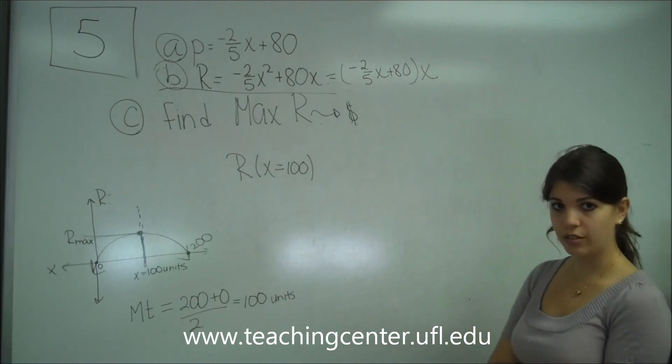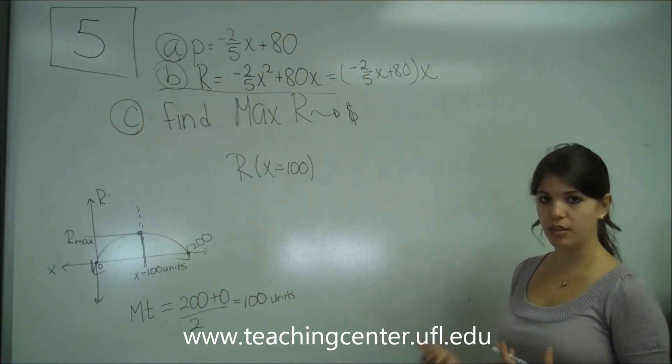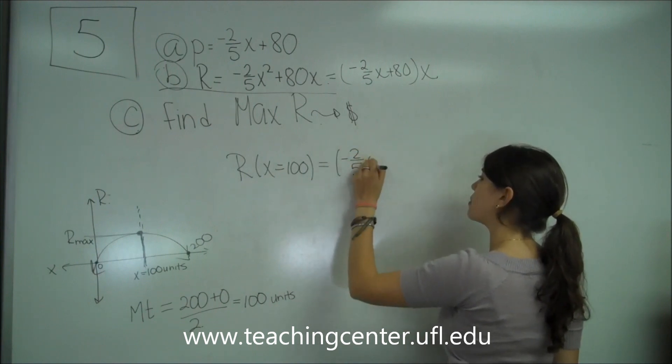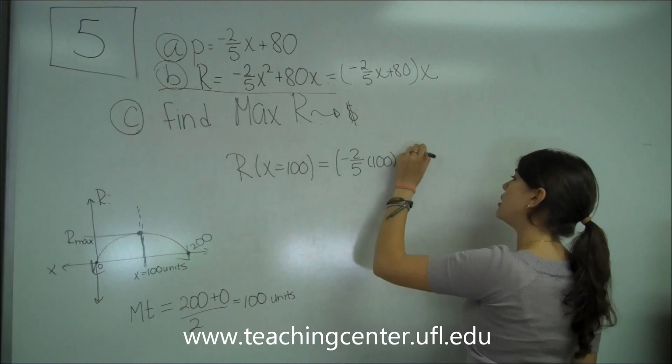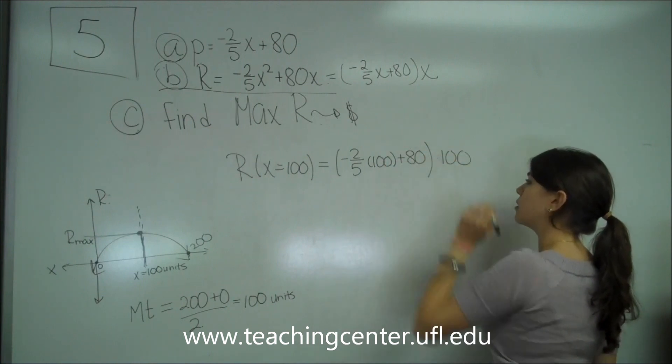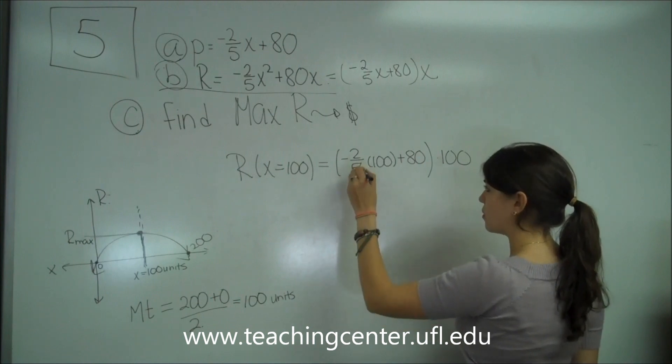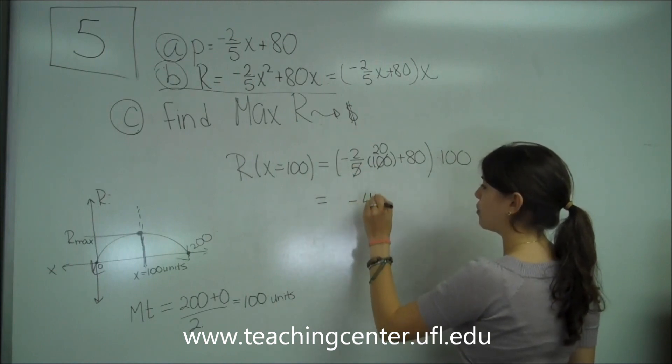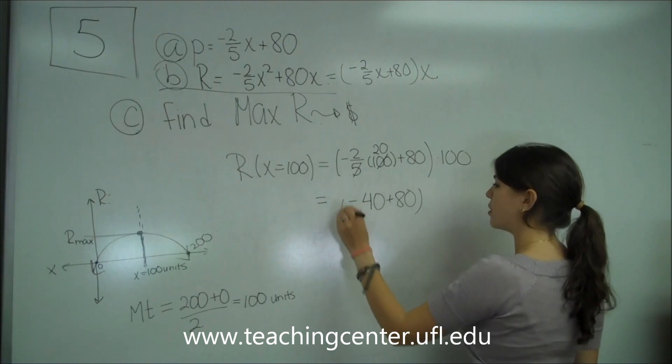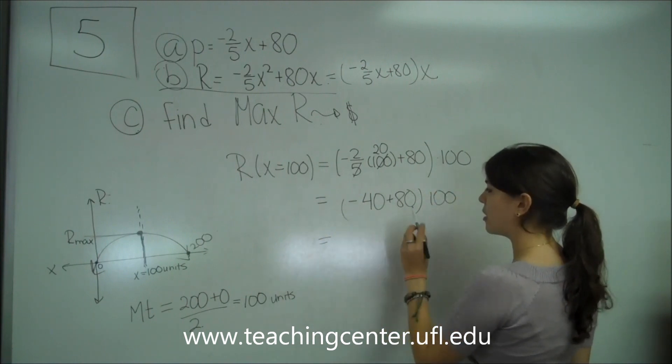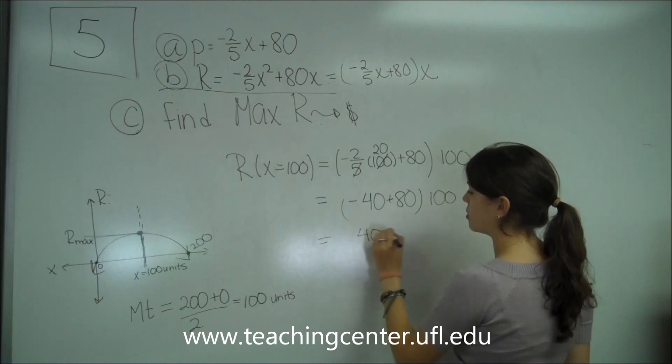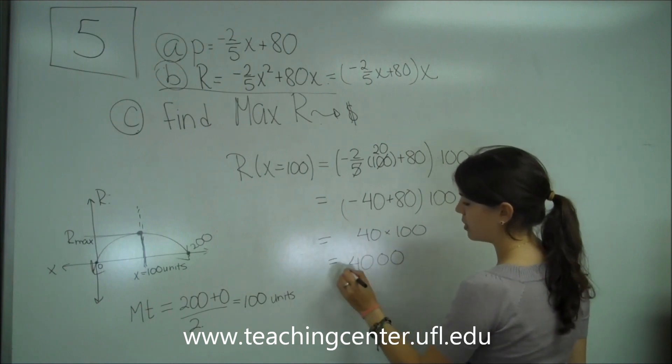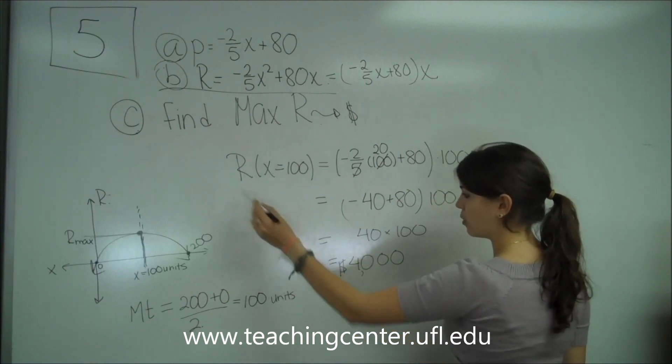Remember, we want to speed up the amount of time it takes us to do the algebra. So, negative 2 fifths times 100, plus 80, all times x. So, I can cancel the 5 with the 100 to get me 20. So, I'm getting negative 2 times 20 is negative 40, plus 80, all in parentheses, times 100. So, this ends up giving me 80 minus 40, which is 40, times 100. So, all I have to do is add two zeros to 40, and it turns out to be $4,000 equals r.